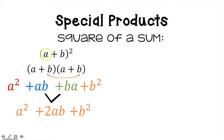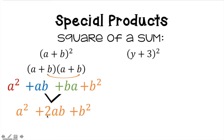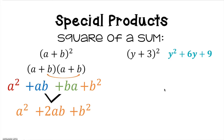Essentially, the first term in your binomial is squared, and the second term in your binomial is squared. The middle term — the OI from FOIL — is your first times your last, doubled. So I multiply a times b and double it, multiplied by 2. Which means if we have a problem like (y + 3) squared, we'd have y squared and 9 as first and last terms respectively. The middle term would be 3 times y doubled, giving you y squared plus 6y plus 9.